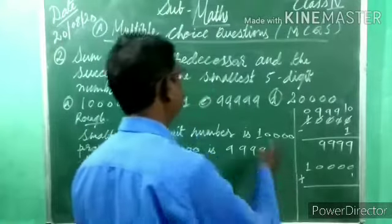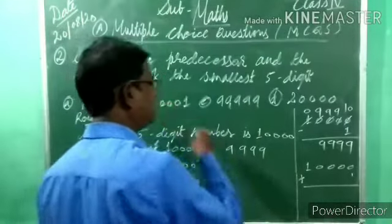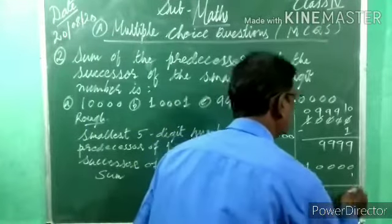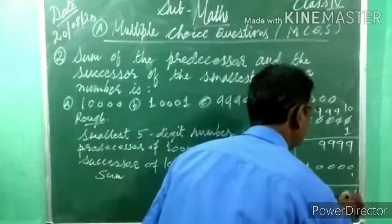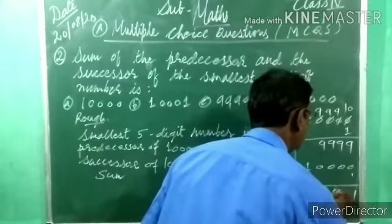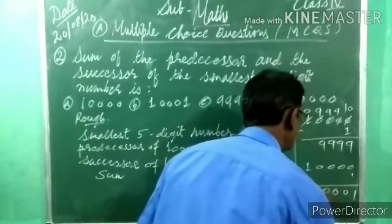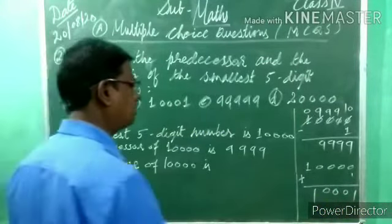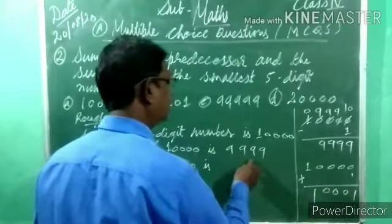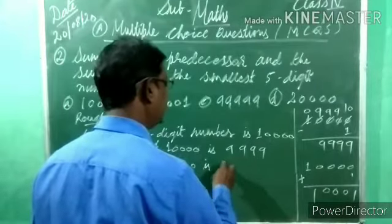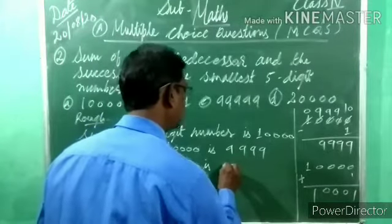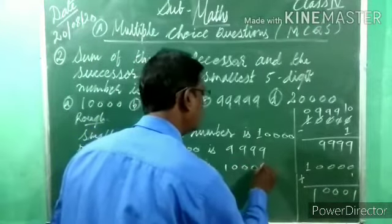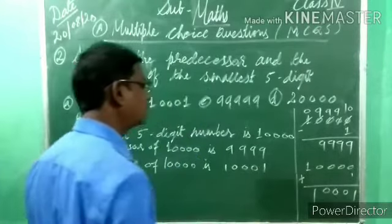Now find the successor: ten thousand plus one. Zero plus one is one, so we get ten thousand one (10,001). That is the successor.